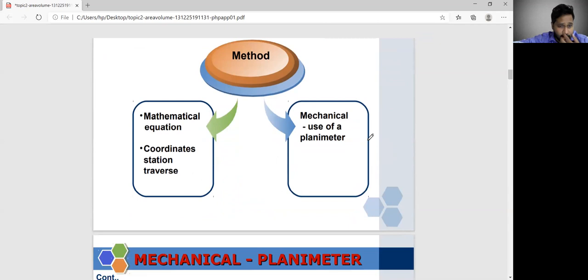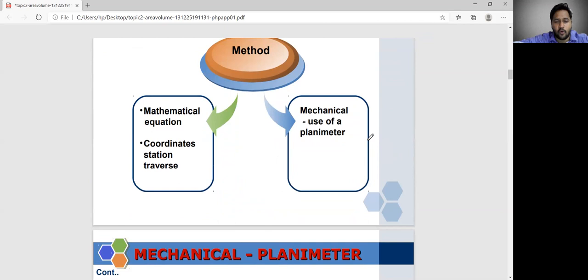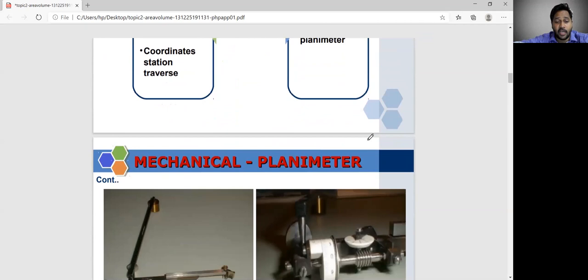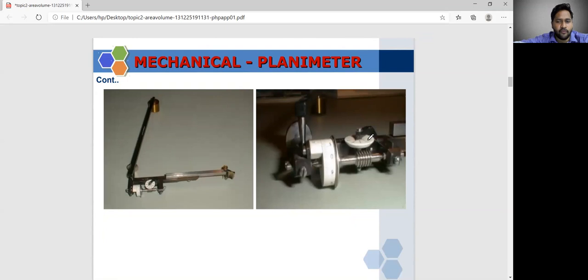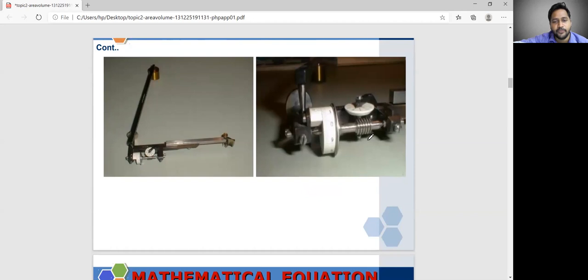Next, the rectangular areas. That is, we can find this mathematical equation or coordinating stations traverse. If in mechanical, if you want to calculate that areas by using planimeter. Mechanically, we have an instrument that is called planimeter. In our surveying lab also, we have this instrument. This instrument will be used for calculating the areas.